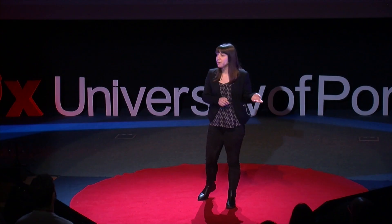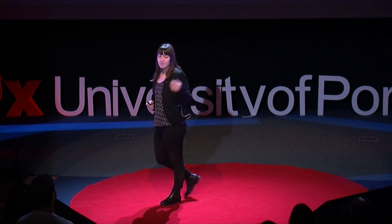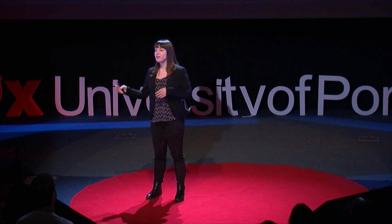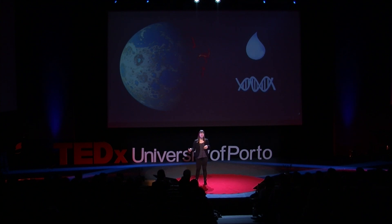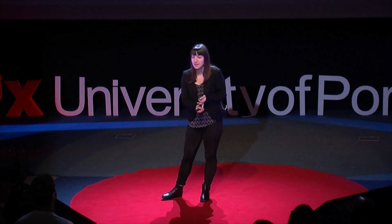So what does it take for life to emerge? At least as we know now, two things: liquid water and organic molecules. On early Earth, the oceans would move molecules around, the tides would bring them together, and eventually the right molecules met at the right time, at the right place, and life emerged.